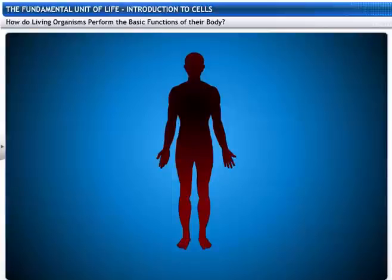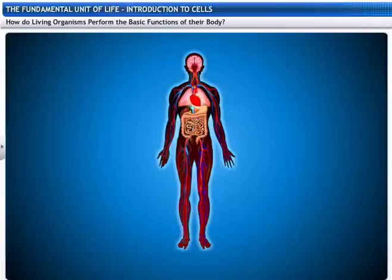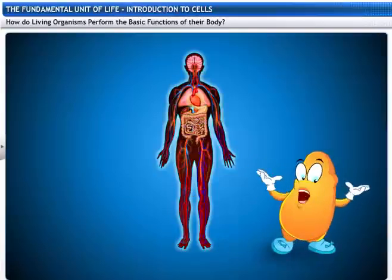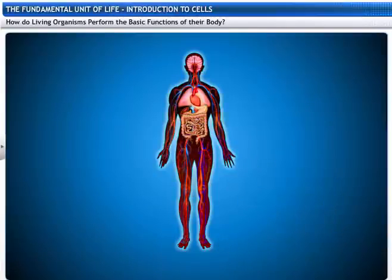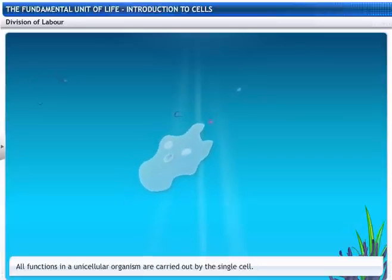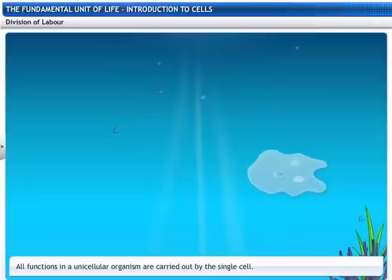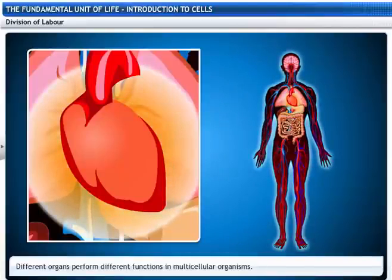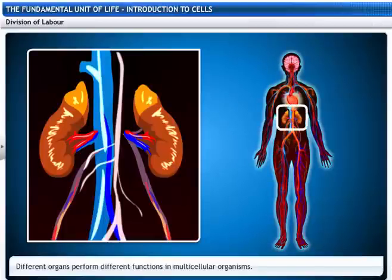Do you know how living organisms perform the basic functions of their body? Living organisms perform basic functions through division of labor between different organs. Different cells have different jobs allotted to them and we all work as a team for the body to function. All functions within a unicellular organism are carried out by the single cell itself. For example, in amoeba, a single cell is responsible for movement, intake of food, exchange of gases and excretion. On the other hand, different organs perform different functions in multicellular organisms — for example, the human body has a heart to pump blood, a stomach to digest food and kidneys to excrete waste.